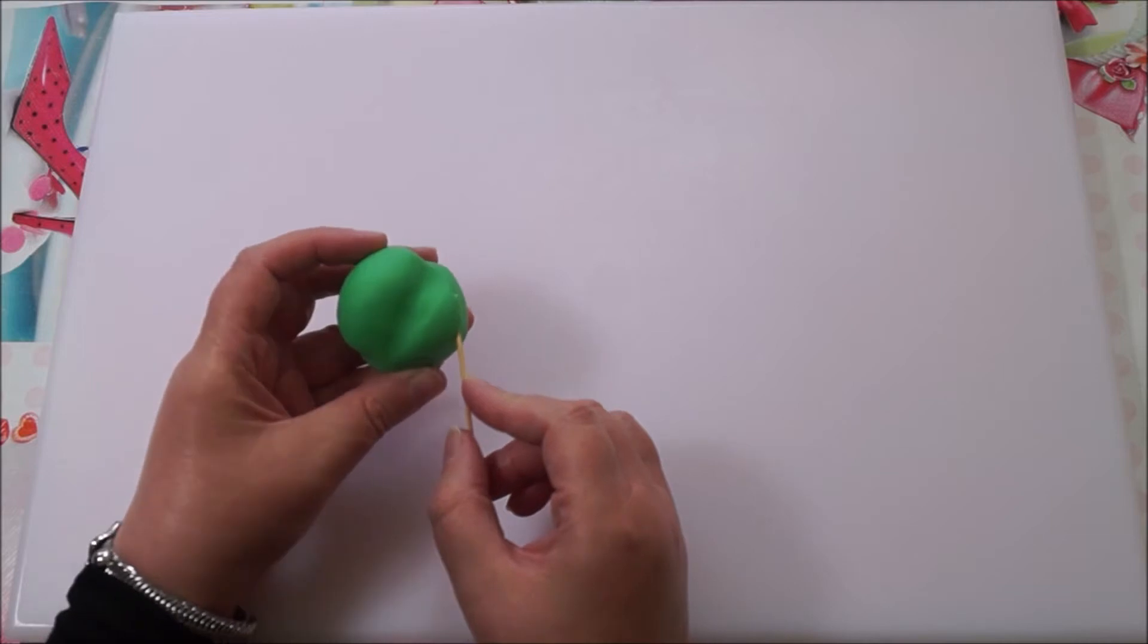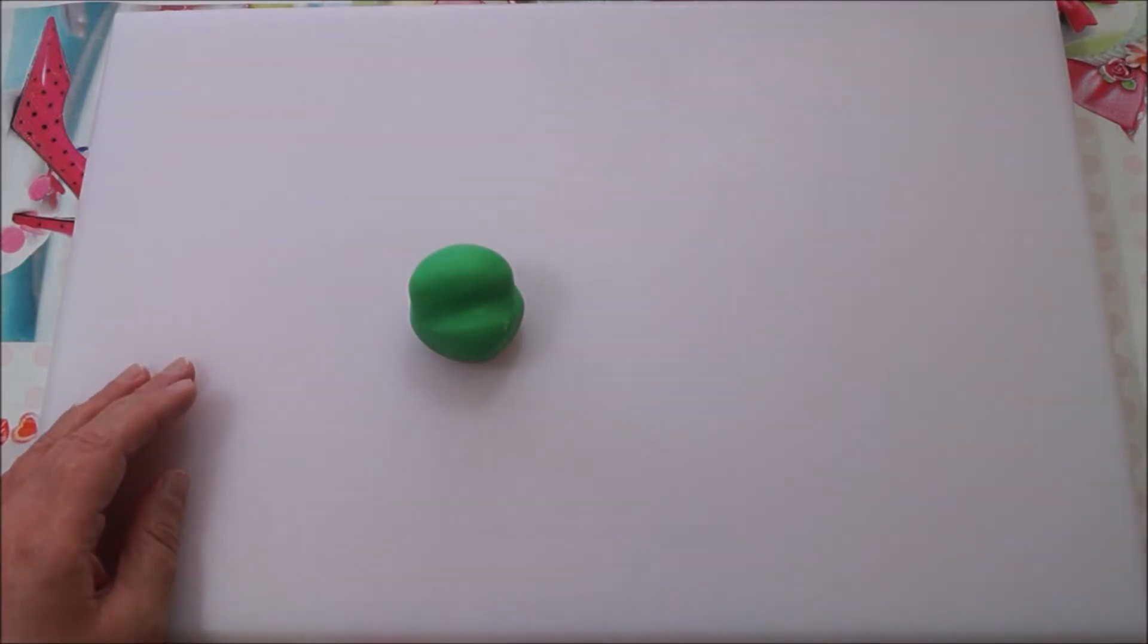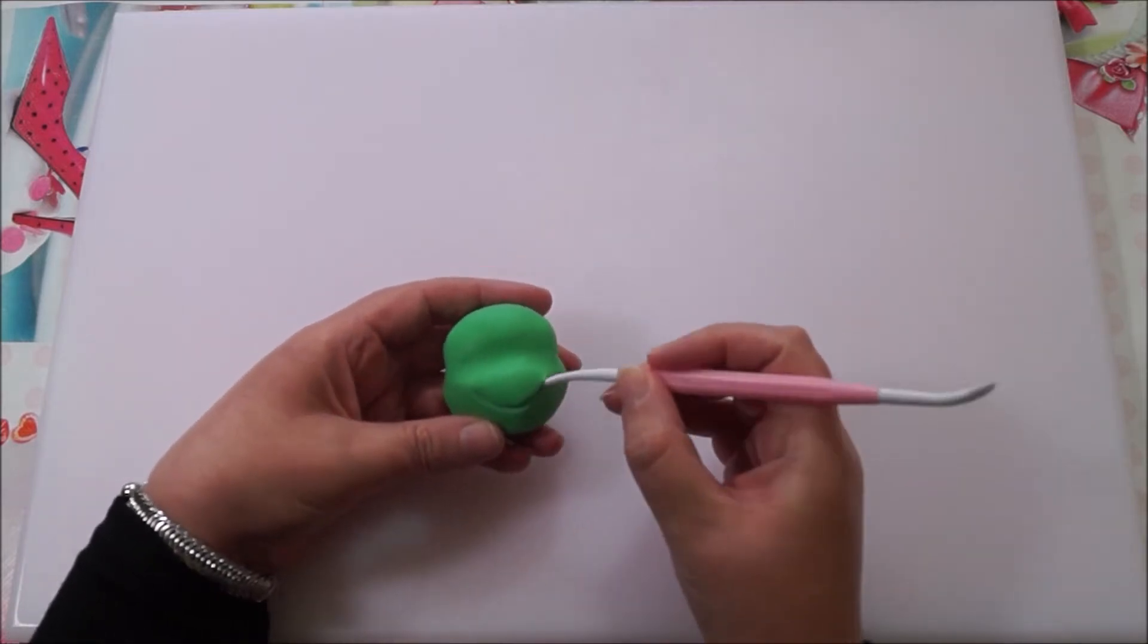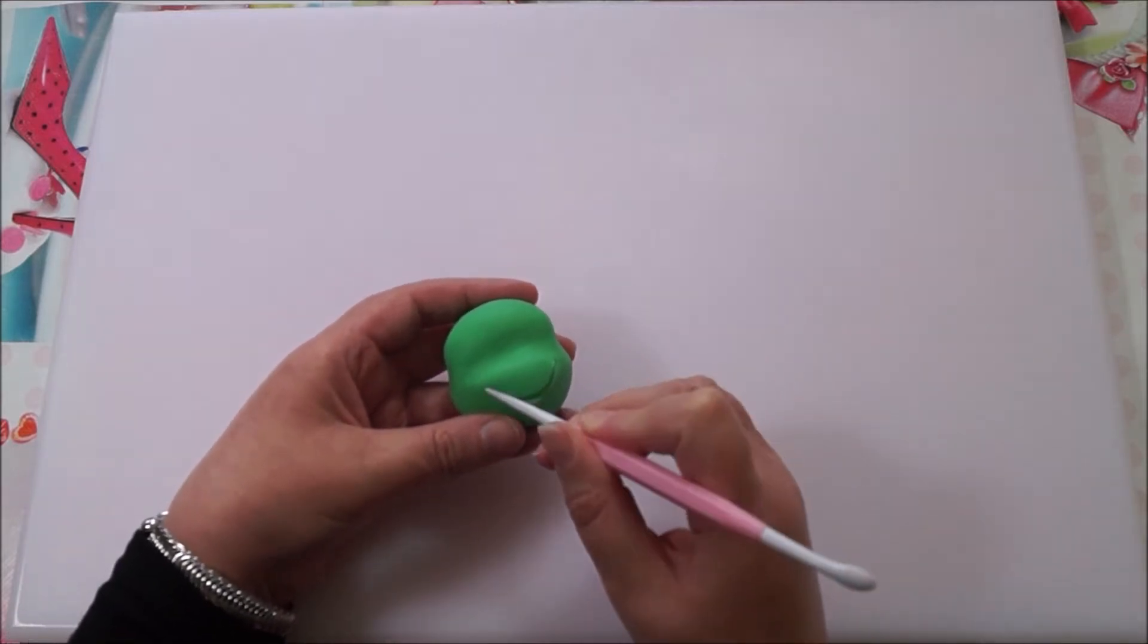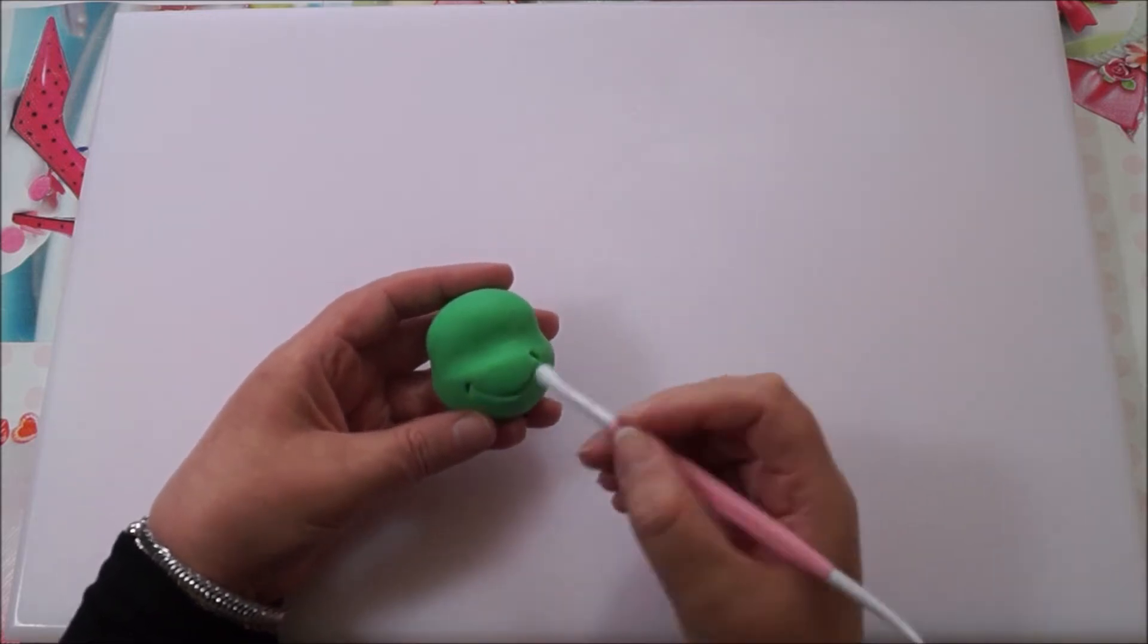Once you're happy with the mouth shape, take the end of your veining tool and make it a thicker, deeper indentation, and use the other end of your veining tool to make the edges of the mouth.